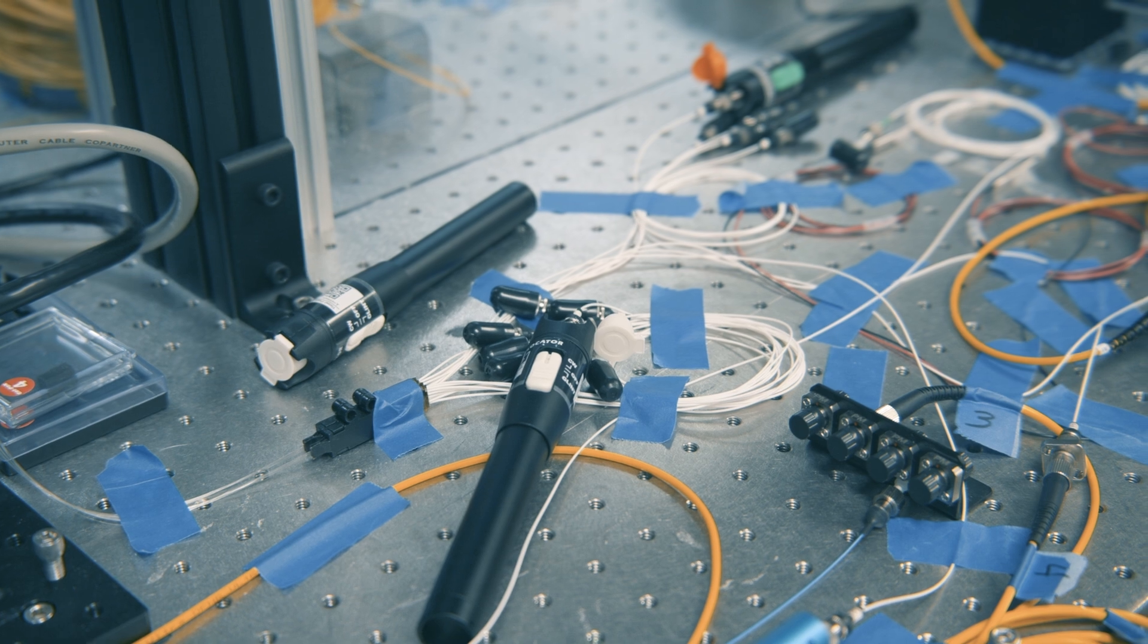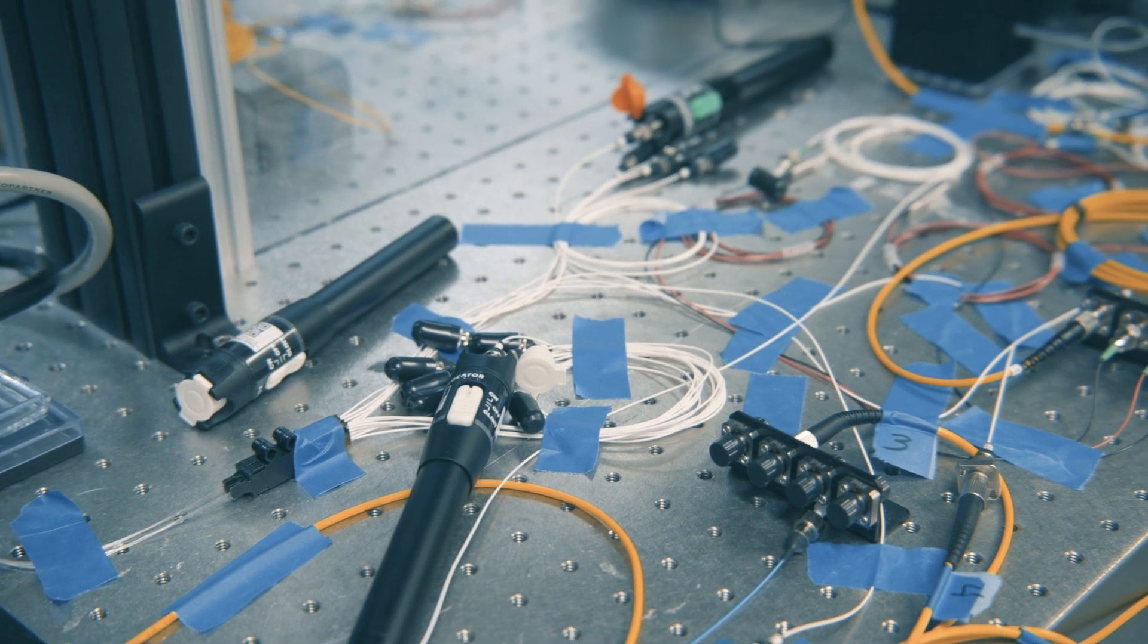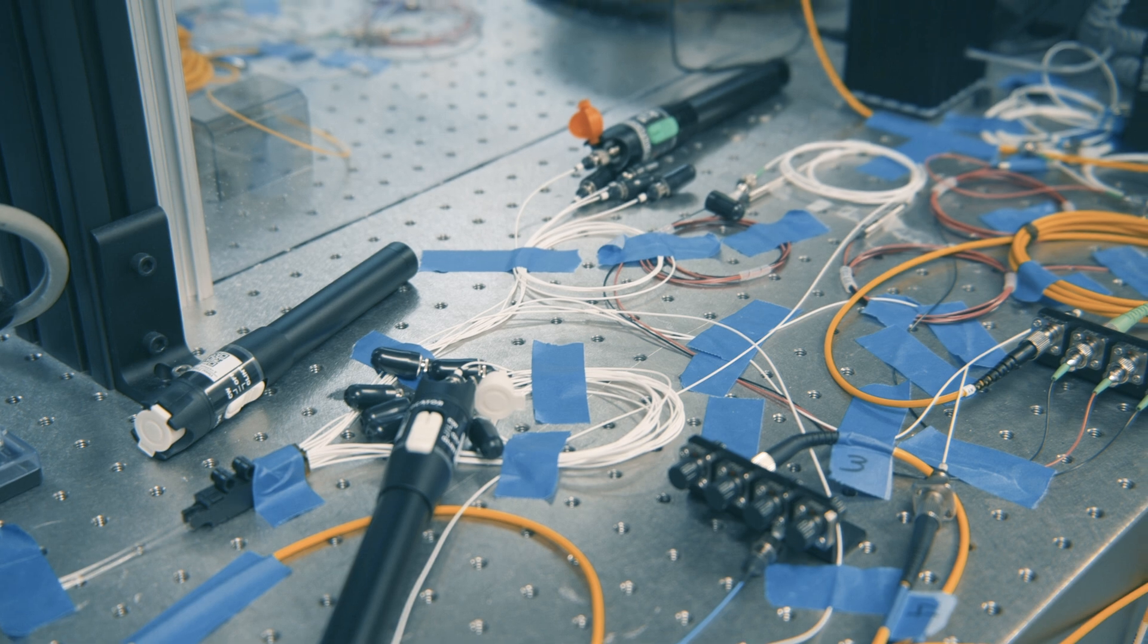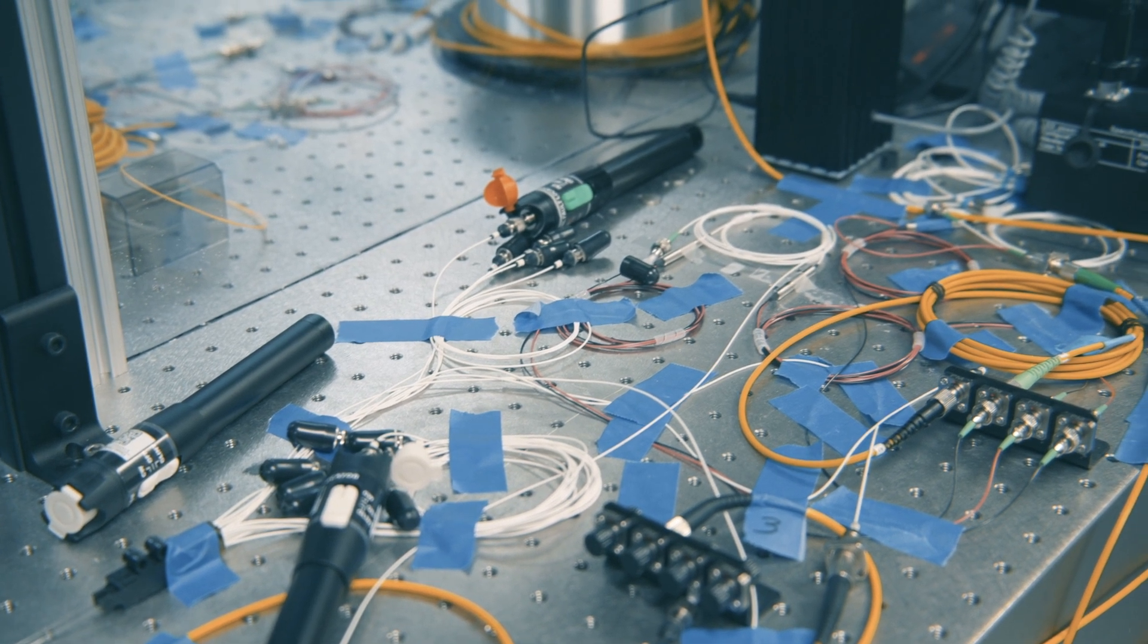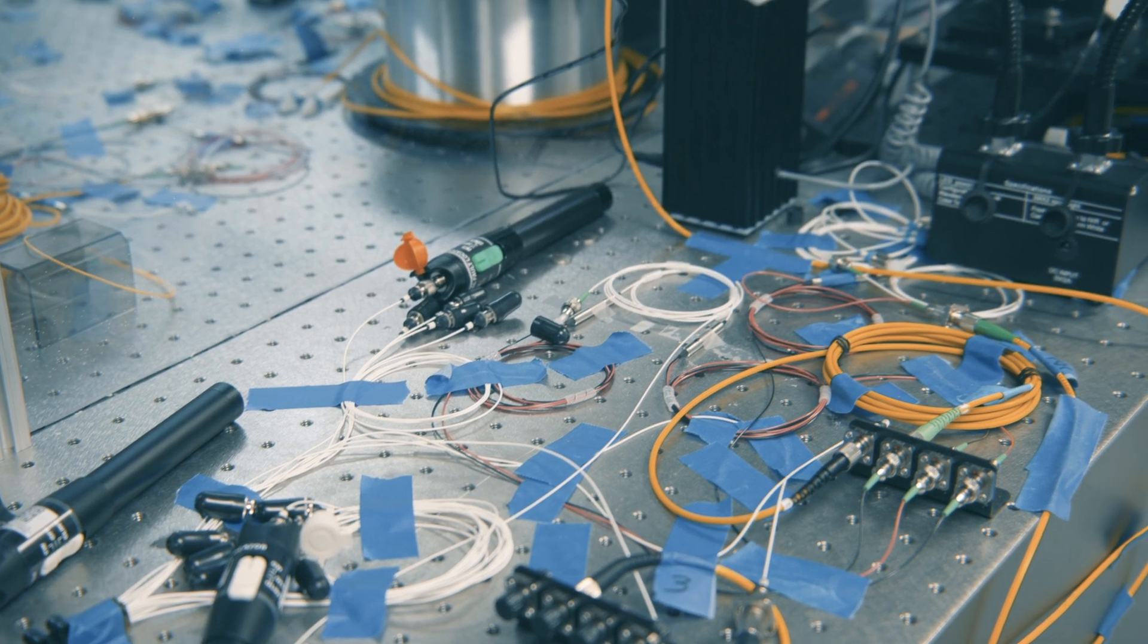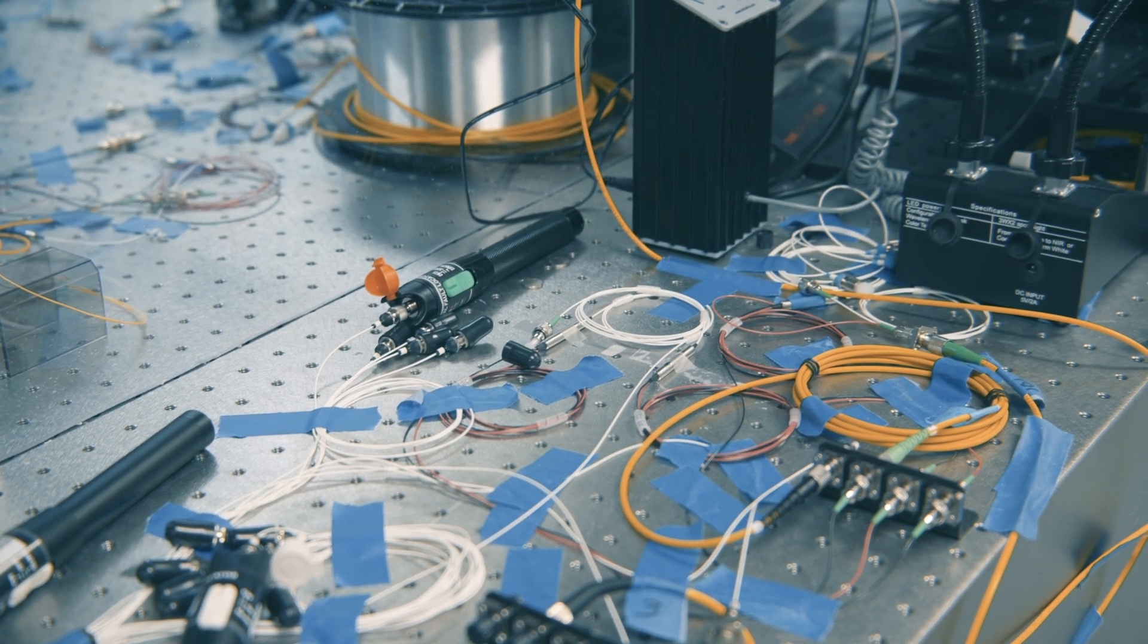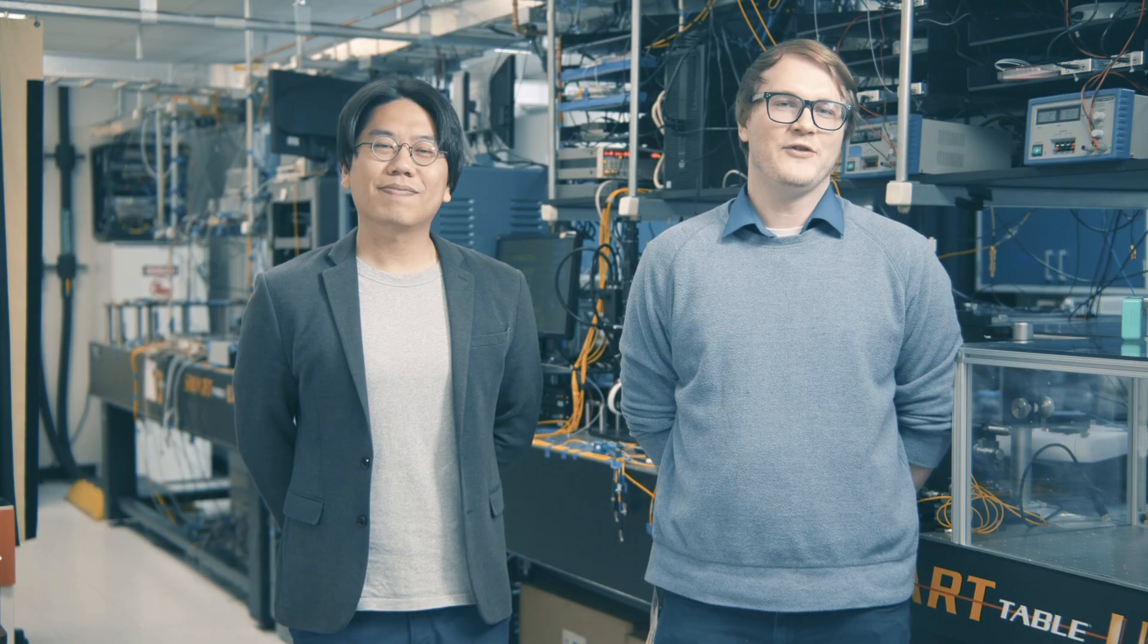Once the entangled pairs are generated, we collect the pairs back out of the fiber array. Going through another set of DWDMs, we hope to filter out any excess pump light that might have coupled out of the ring. Now with the entangled pairs generated, we are ready to transmit the entangled pairs to the other table for measurement. There we will perform the quantum state tomography where we make a series of measurements of our quantum state and do some numerical computing post-processing to analyze and reconstruct it. Thank you for listening, and we hope you enjoyed our brief quantum networking tour at Oak Ridge National Laboratory.